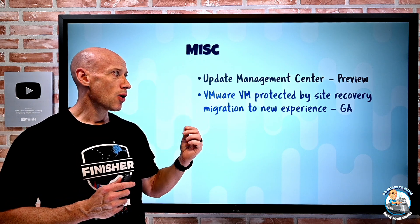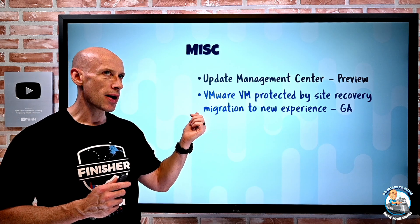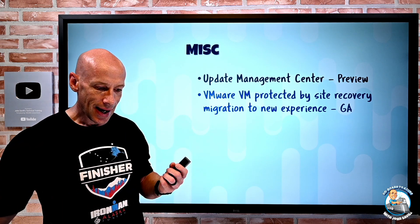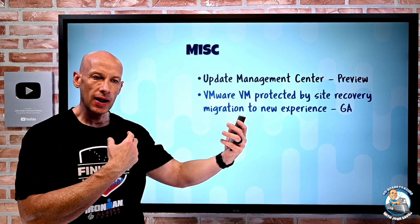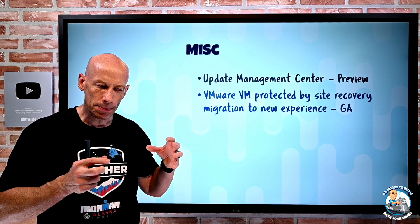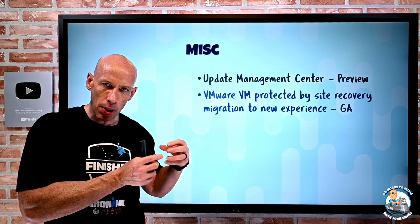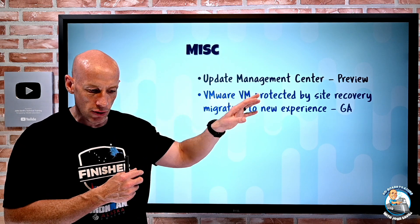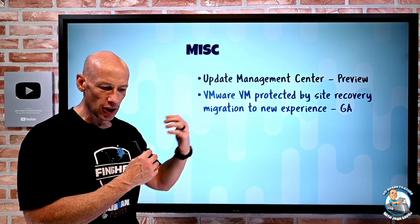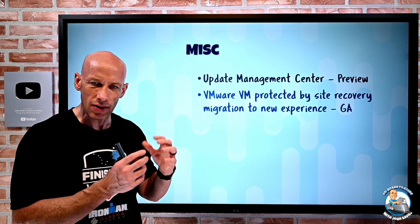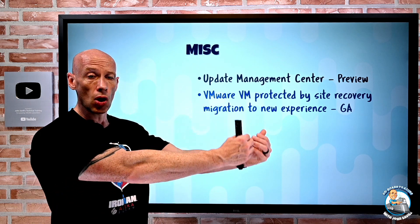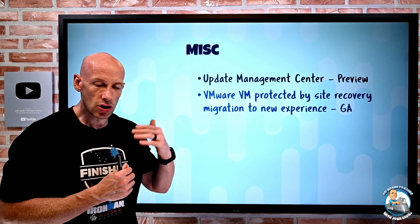VMware VMs protected by the Site Recovery agent now have a migration to the new experience. With Azure Site Recovery there's really a classic and then a new modern way of enabling replication from VMware workloads to Azure. The classic method had a configuration server, whereas the modern method now has a modern appliance that sits on-premises, a whole bunch of Azure-hosted microservices, and that on-premises migration appliance acts as a proxy server for communication, providing caching, compression, encryption, and a few other things. Now I can very simply switch from the classic to the modern replication appliance through just a few clicks.